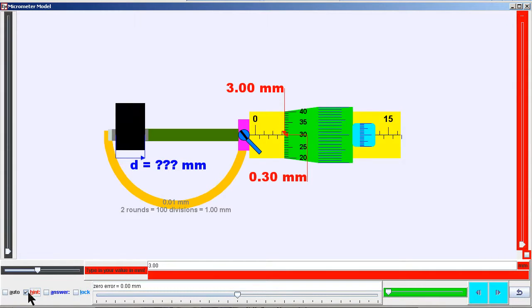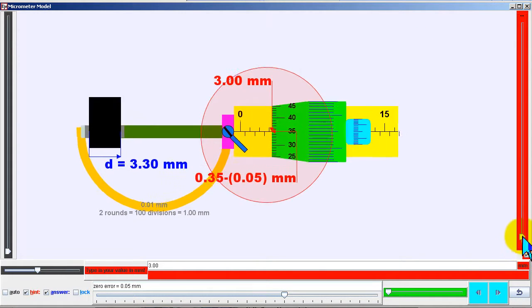I will now use the micrometer computer model to illustrate the hints, answers, and zero error features. I'm going to check on the zoom.